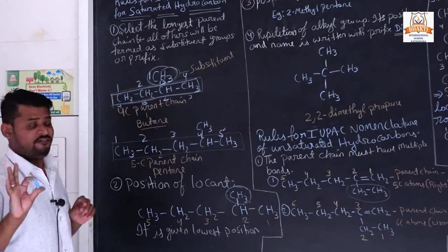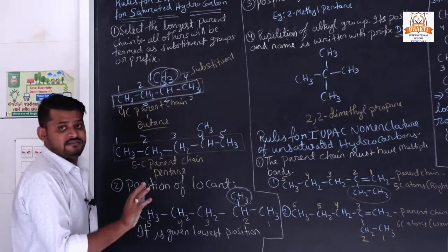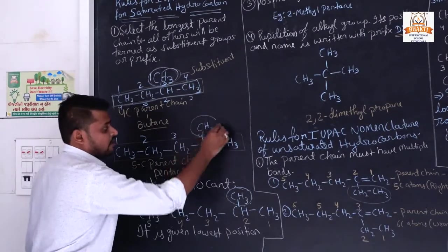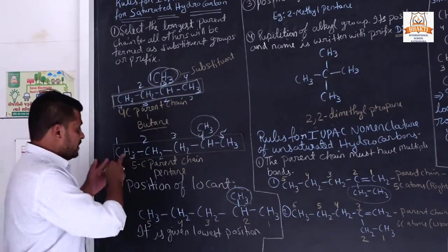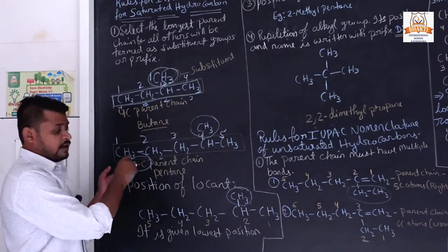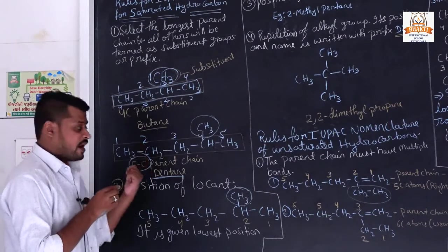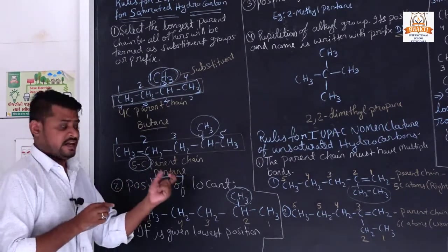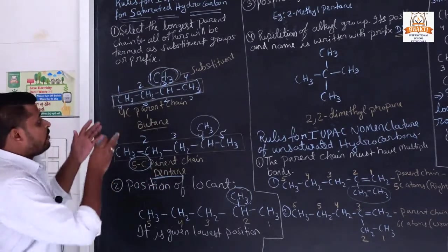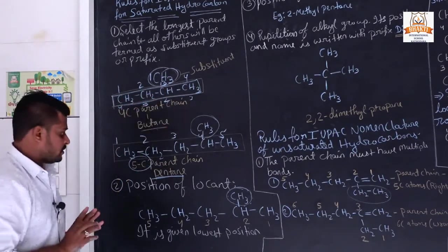The substituent is identified. In the parent cell there are five carbon atoms. The word root name is pentane — because the number of carbon atoms in the parent chain is five. Did you understand how we give the root name? Now we will see the position of the locant.